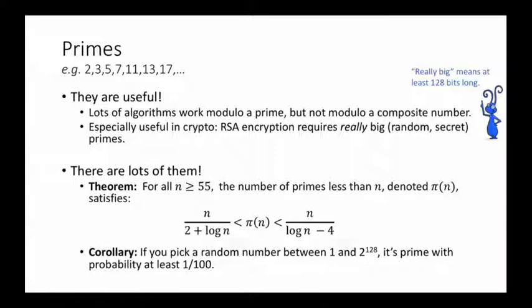Fortunately, there are lots of primes. There are infinitely many of them, and moreover they're pretty dense in the integers. For example, there's a theorem that says that for all large enough numbers n, the number of primes less than n, denoted π(n), satisfies this equation. That is to say π(n) is basically on the order of n divided by log n, plus or minus 2 or 4.